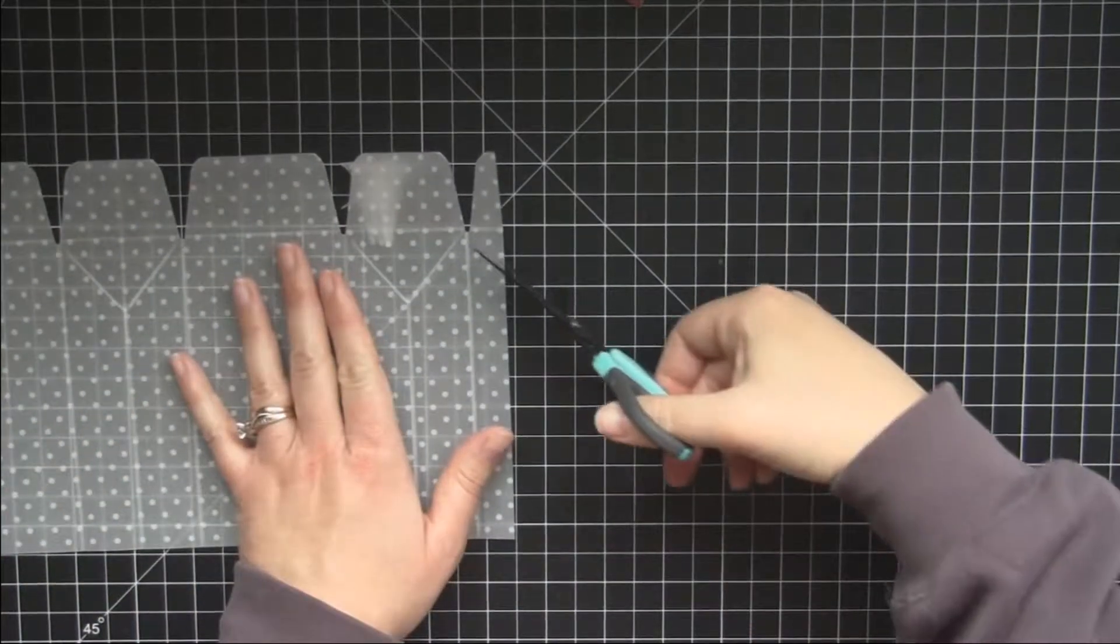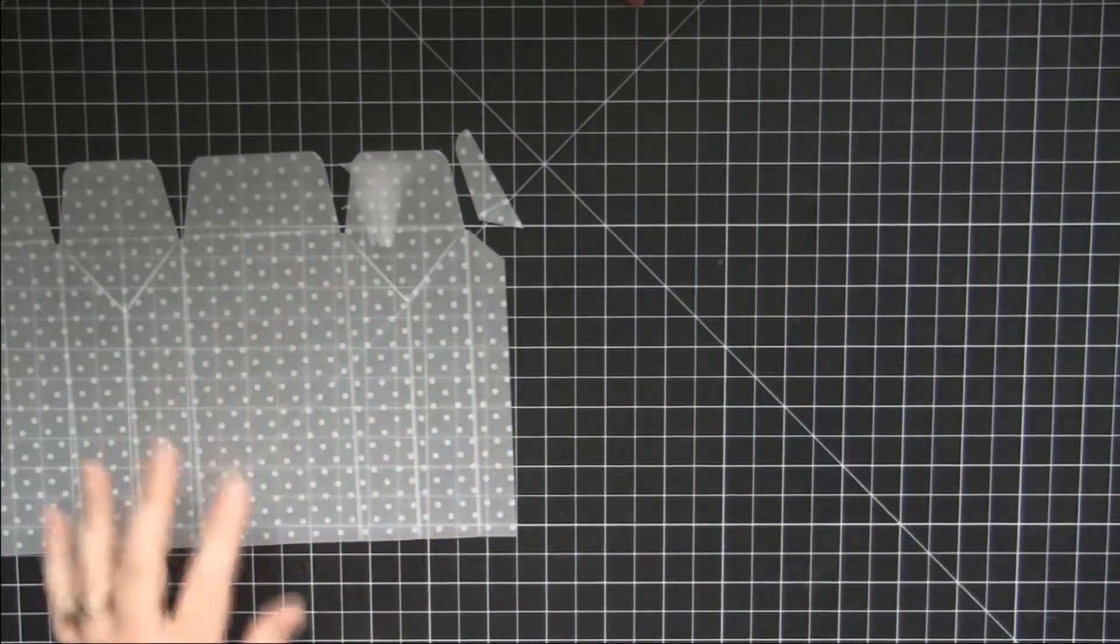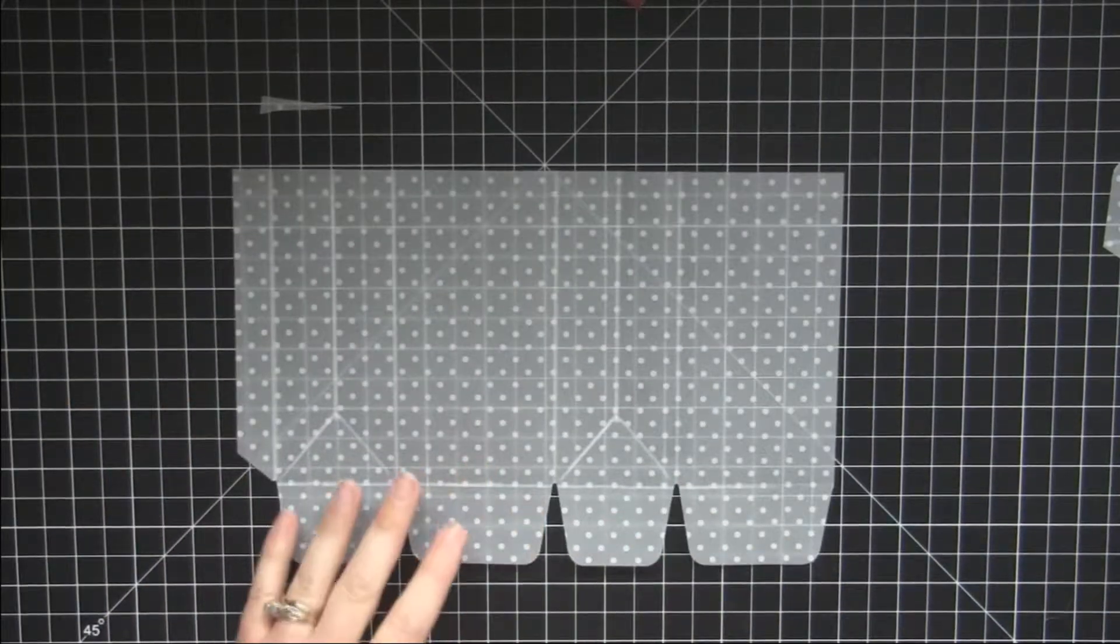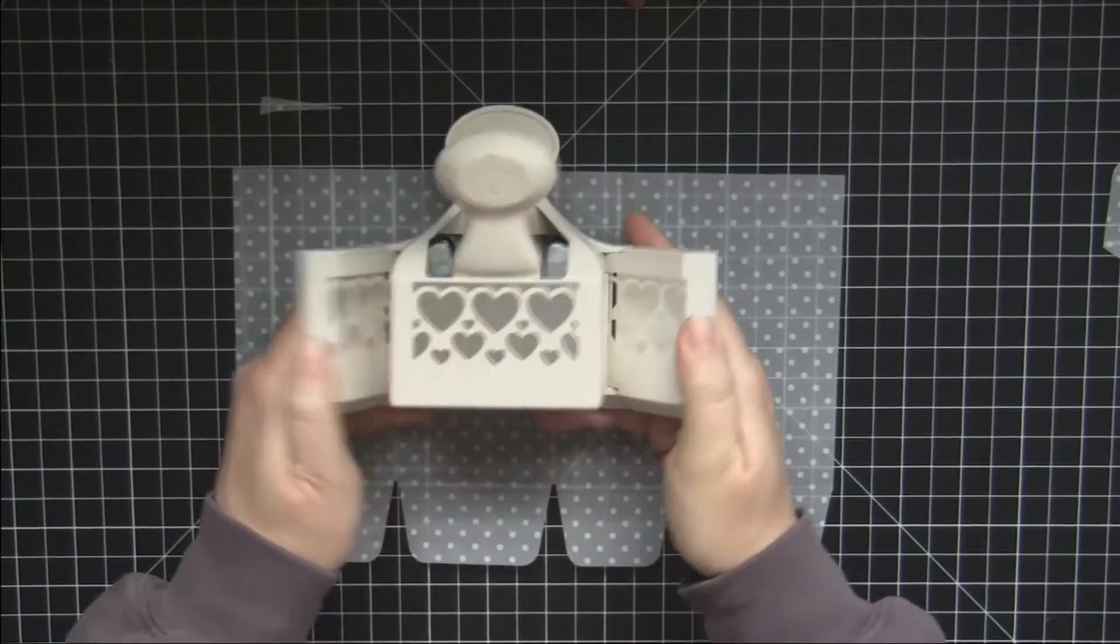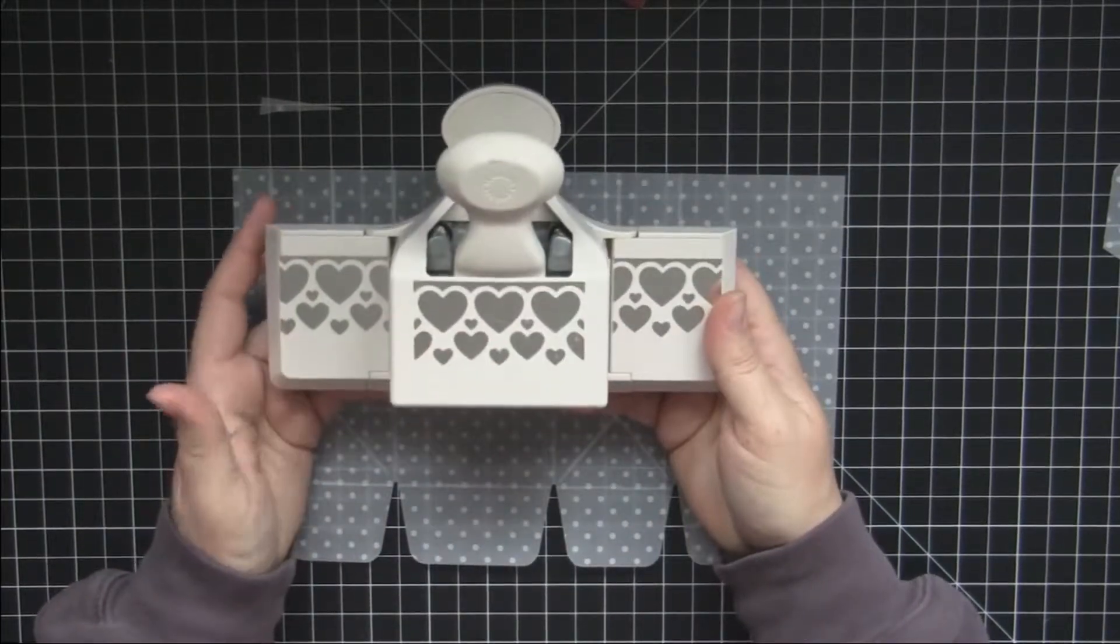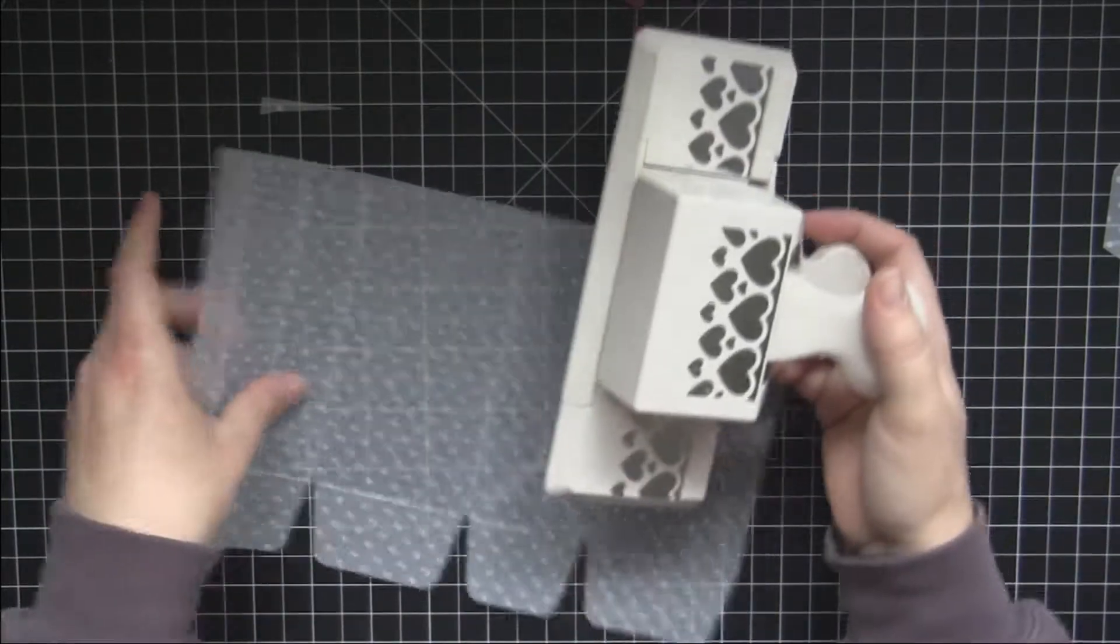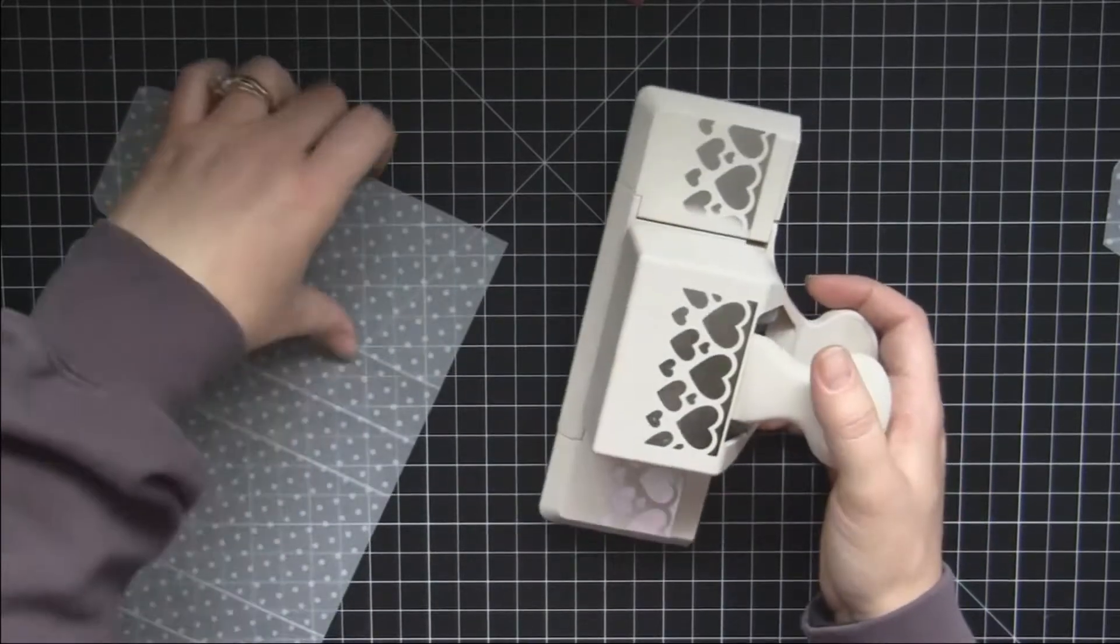Okay then I'm going to cut this off so it doesn't stick out. Now we have the board template. What I did was I took a Martha Stewart Valentine or heart punch. Now we're going to punch the top of the bag.